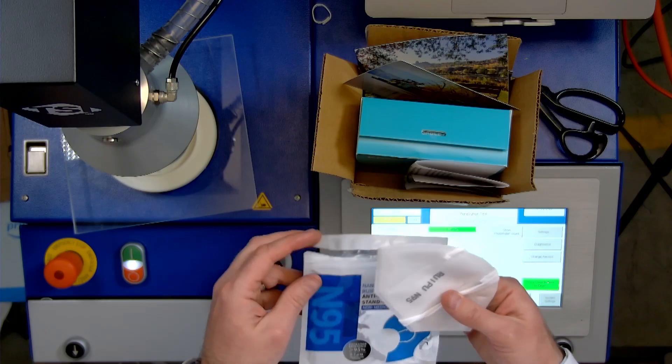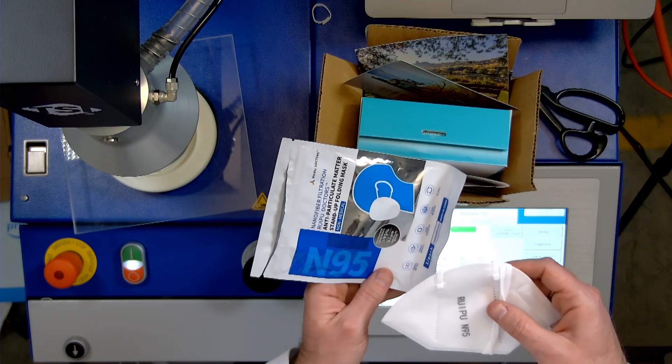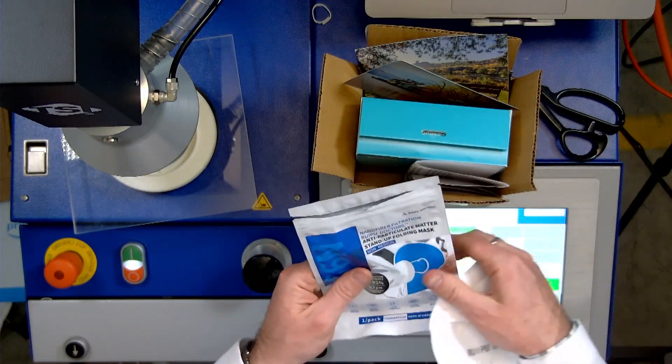So the foil means that it's a barrier package, which is actually really good. That means it's probably not going to have any smells. Oh wait, it says N95. Look at that. This is not N95. Doesn't say KN95. It says N95. This is a fake.